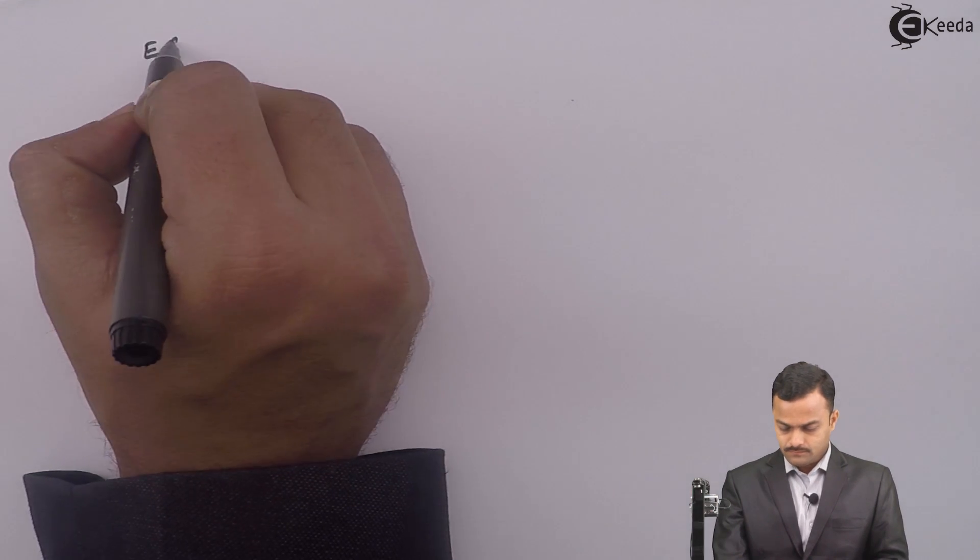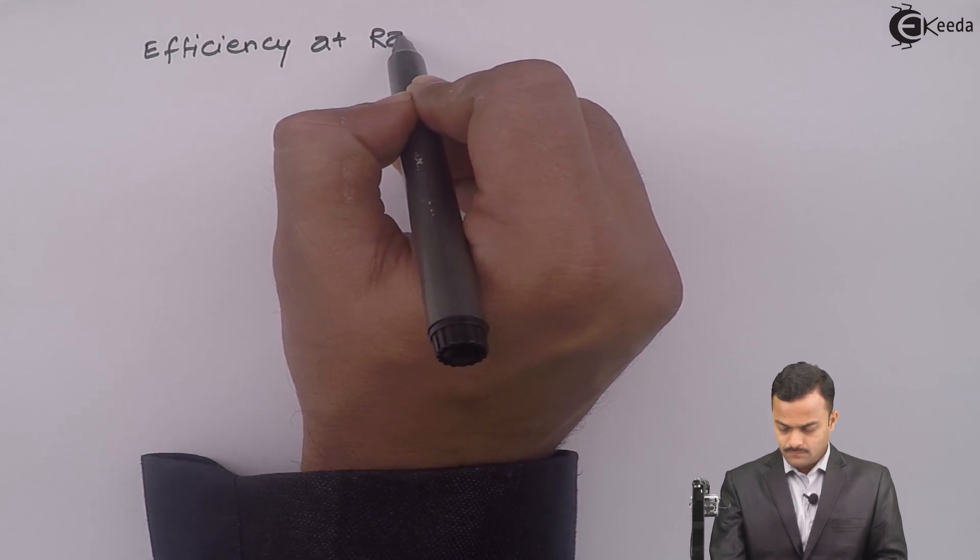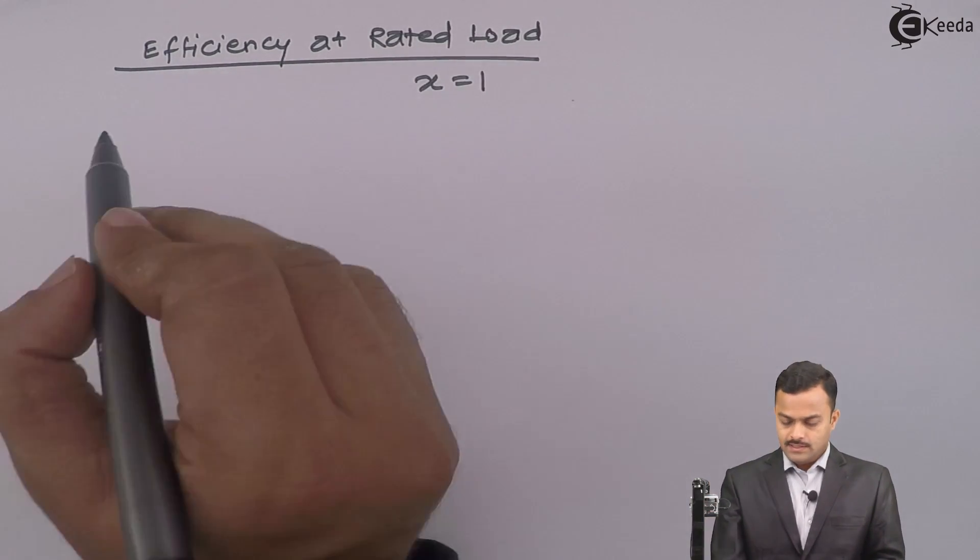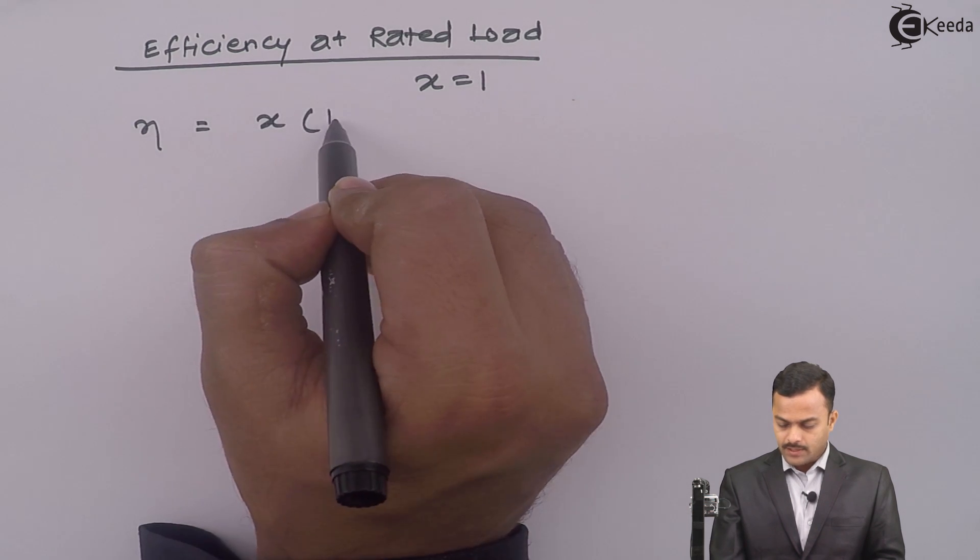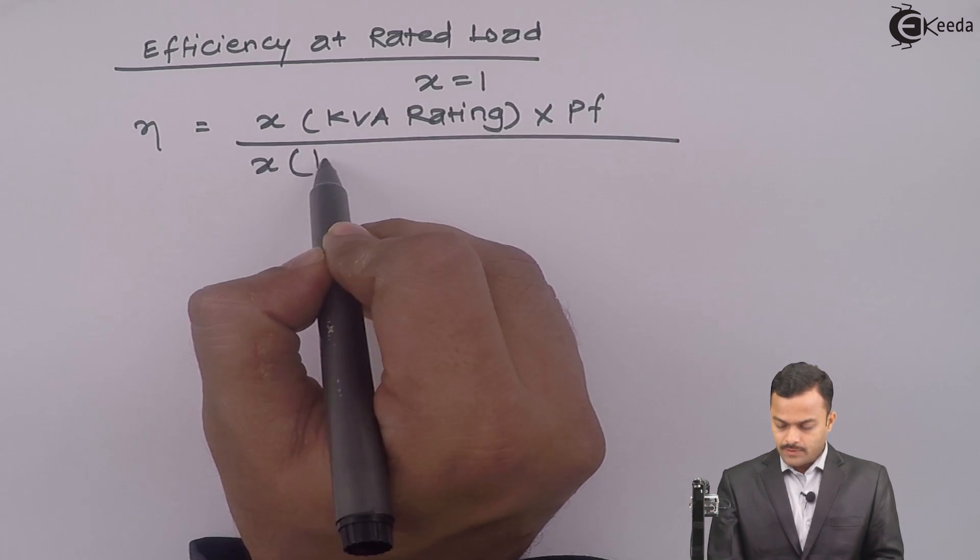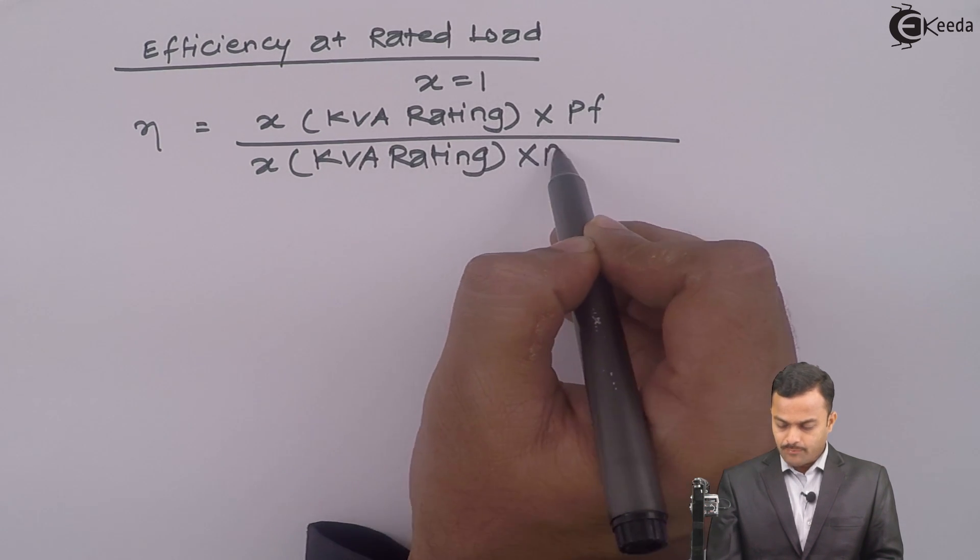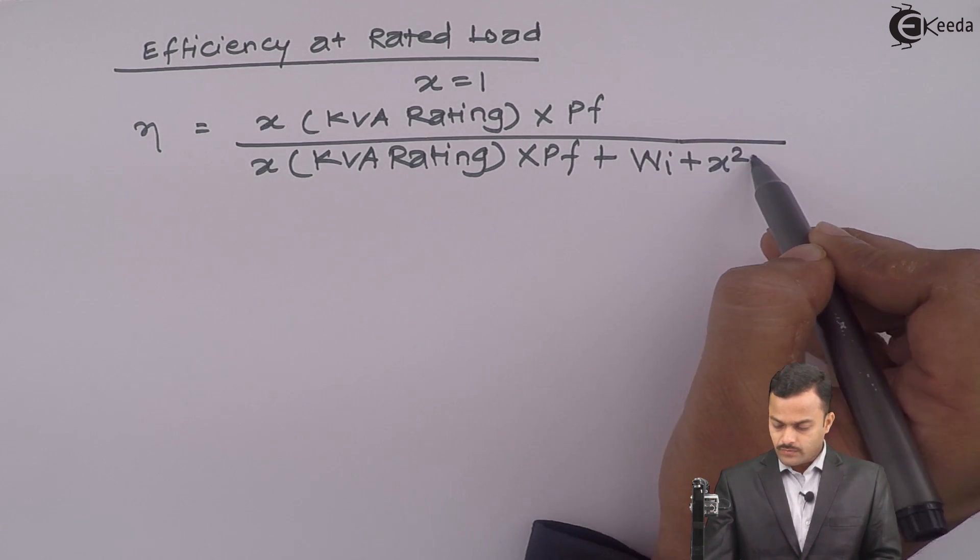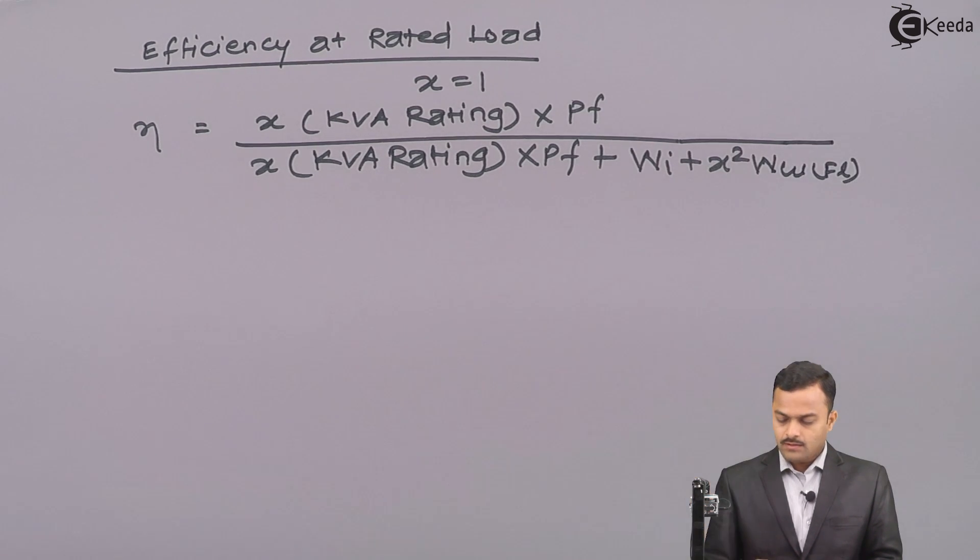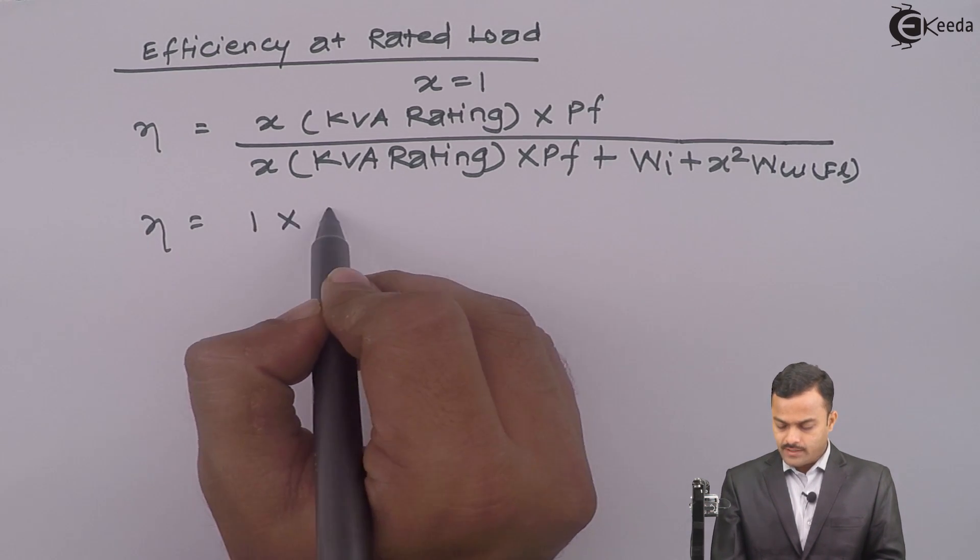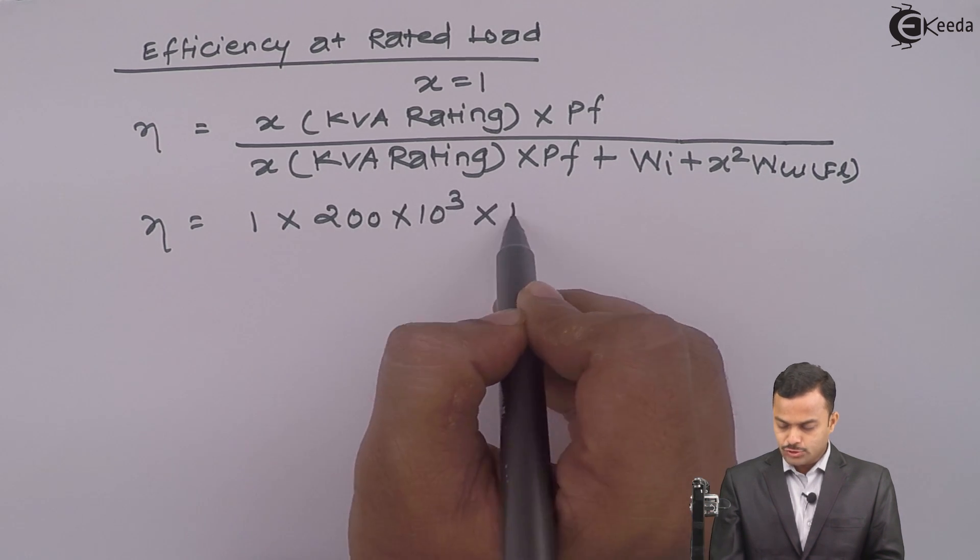So in the first case, we have to find out efficiency at rated load. Rated load means X equal to 1 and so the formula is X multiplied by KVA rating multiplied by power factor divided by X into KVA rating multiplied by power factor plus iron loss plus X square WCUFL. All the values are known to us.